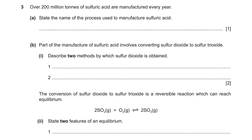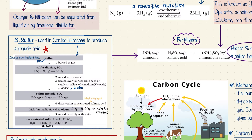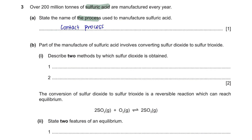Question 3: Over 200 million tons of sulfuric acid are manufactured every year. Question A: State the name of the process used to manufacture sulfuric acid. The answer is the contact process — this is the process of producing sulfuric acid using sulfur.